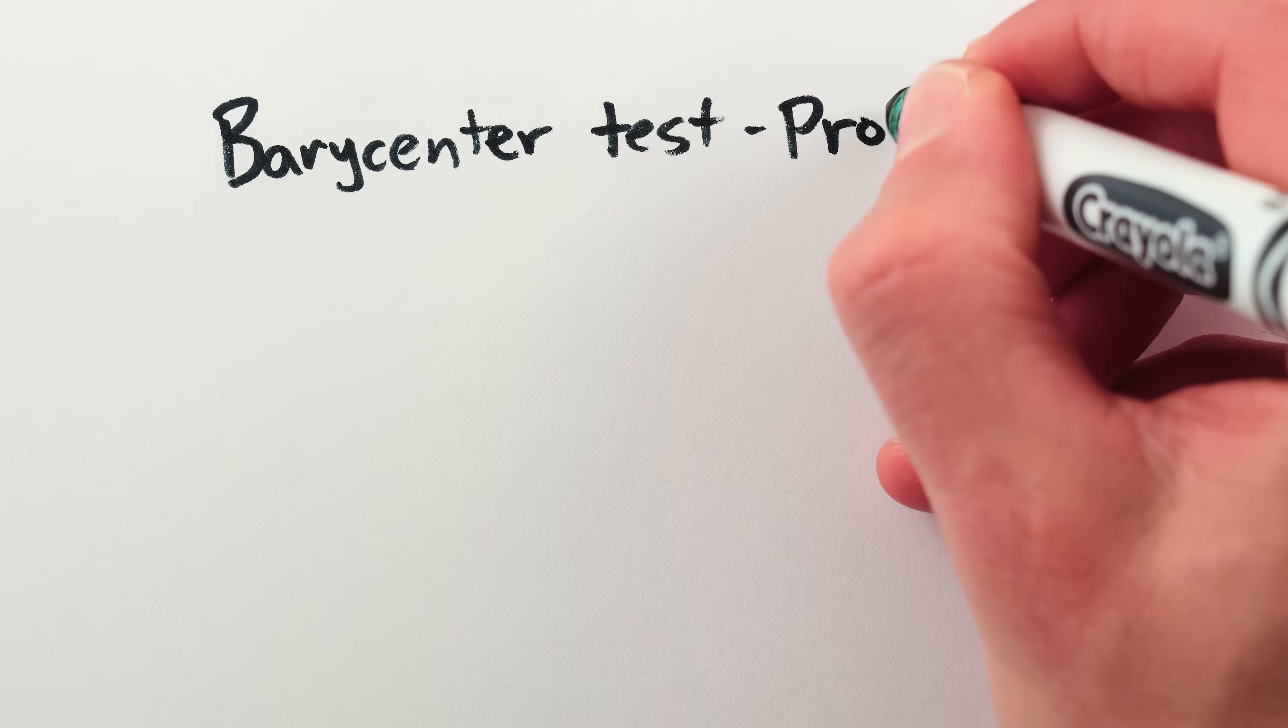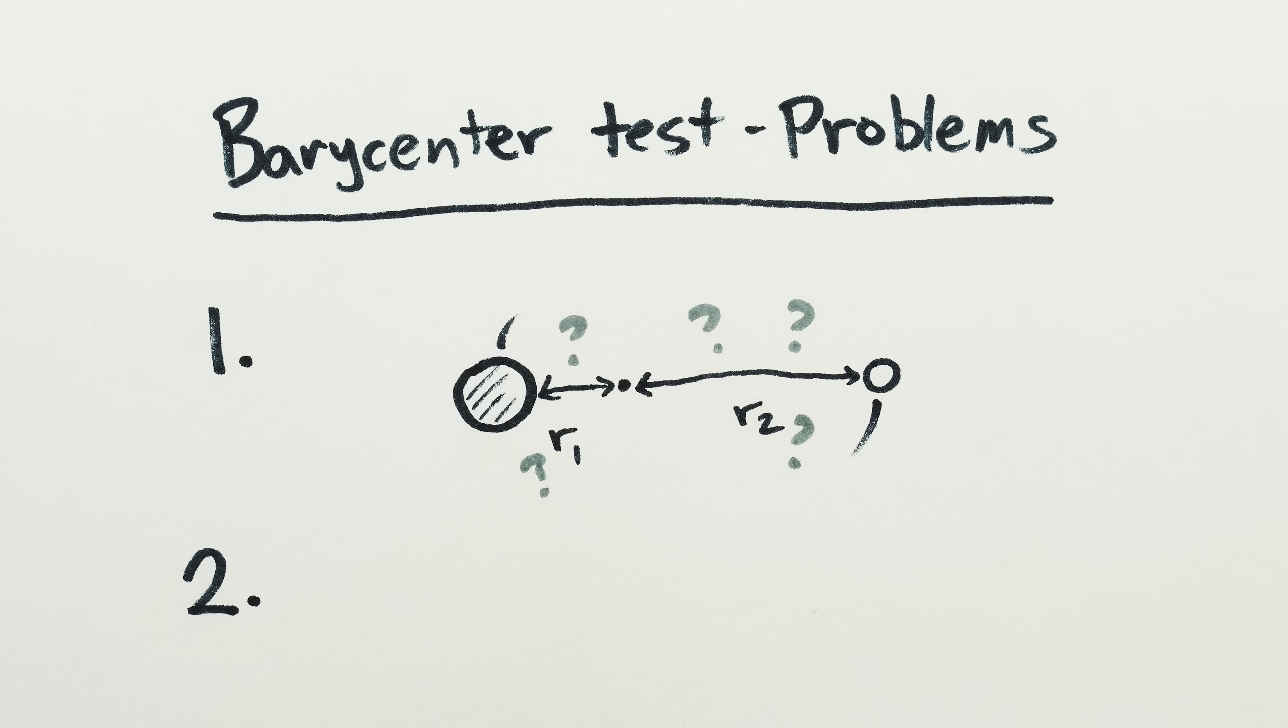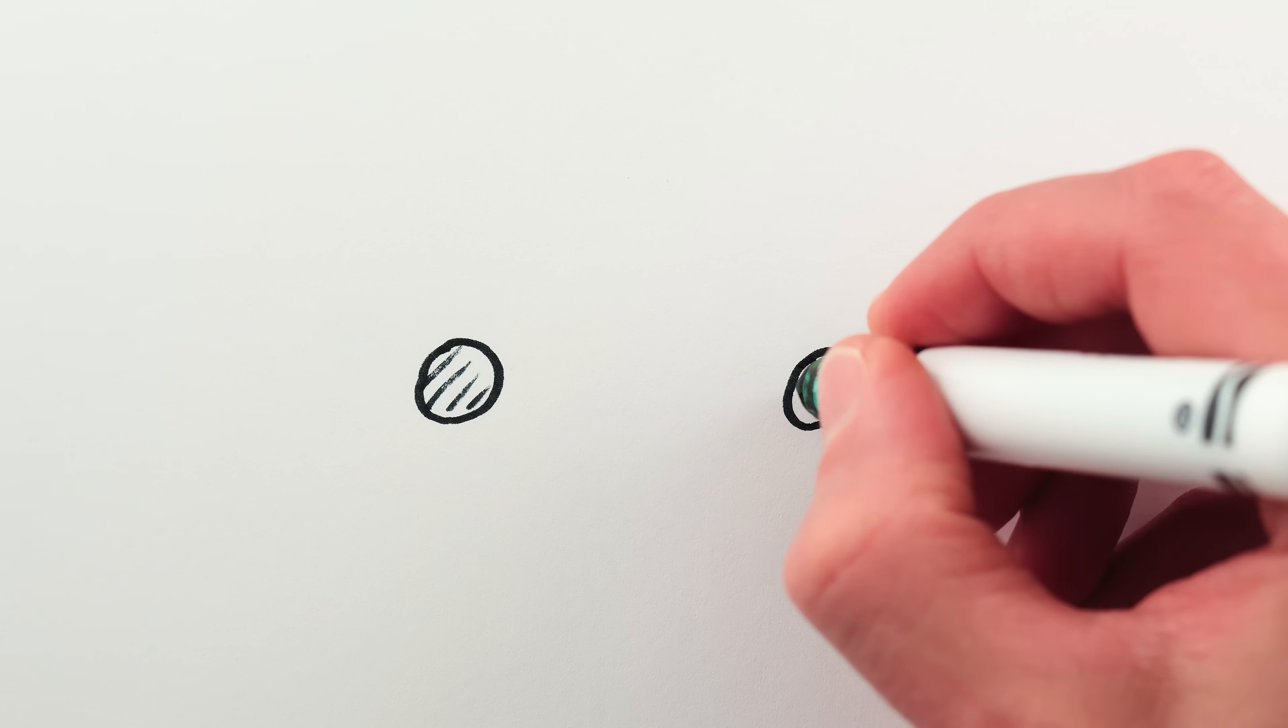Done. But this barycenter criteria has two major problems. The first problem is that, perhaps surprisingly, the barycenter criteria doesn't actually tell us anything about the movement of the objects. On one extreme, take two objects with the same mass on opposite sides of an identical orbit around their center of mass. This is the quintessential definition of a binary system.